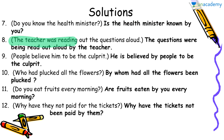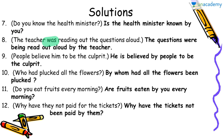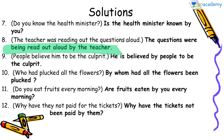The teacher was reading out the questions aloud. The doer is 'teacher'; after it we have the helping verb 'was' followed by the verb in '-ing' form, which tells us the sentence is in past continuous tense. It will be changed as: The questions were being read out aloud by the teacher. Note that 'read' is the first form, but the second and third forms of 'read' are also spelled 'read,' though the pronunciation changes.